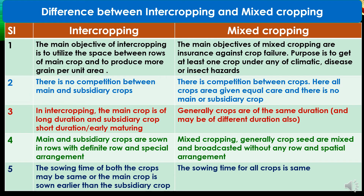Now the difference between intercropping and mixed cropping: first, the main objective of intercropping is to utilize the space between rows of the main crop and to produce more grain per unit area, while the main objective of mixed cropping is insurance against crop failure — to get at least one crop under any climatic, disease, or insect hazard. Second, in intercropping there is no competition between main and subsidiary crops, while in mixed cropping there is competition between crops.